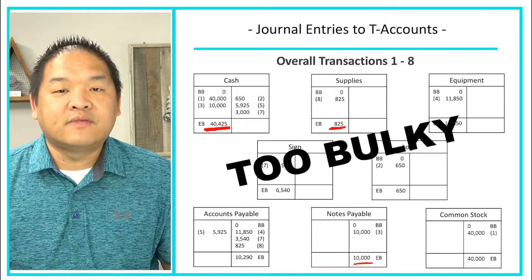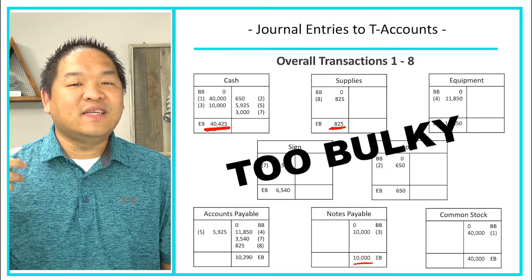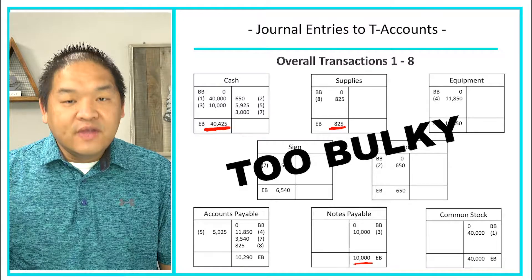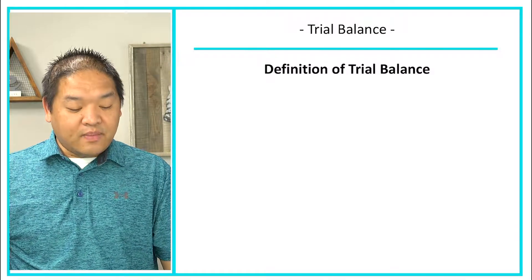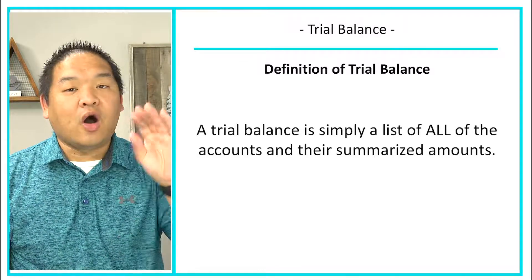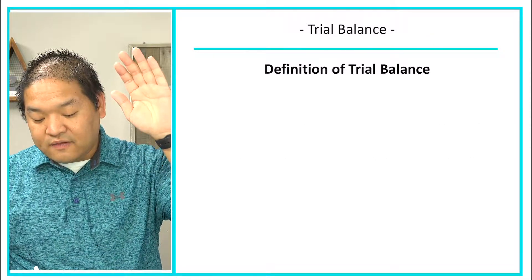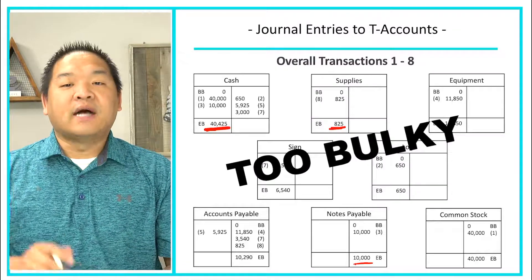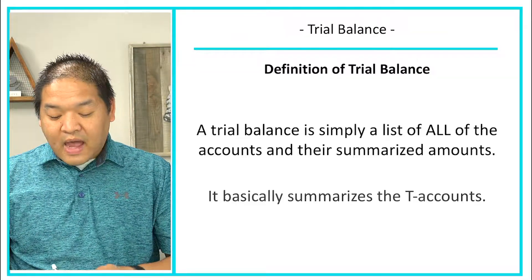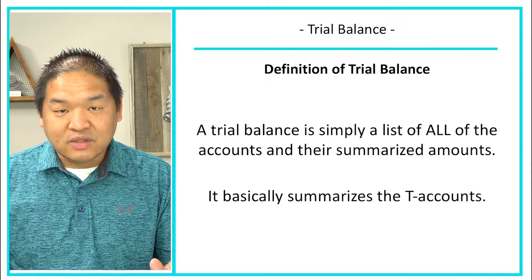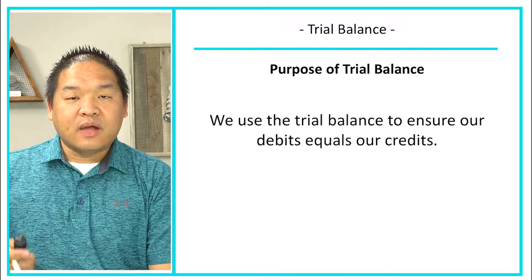We have something called a trial balance — a report form that allows for ease of reviewing accounting data. The trial balance is simply a list of all of the accounts and their summarized ending balance amounts. That's it. It basically summarizes all of the T-accounts.